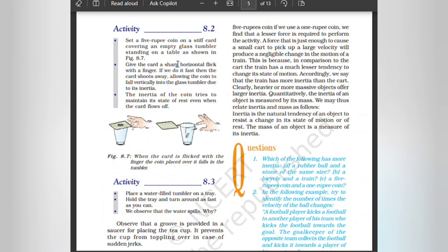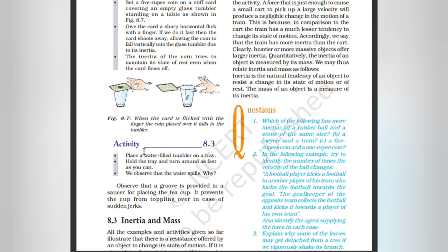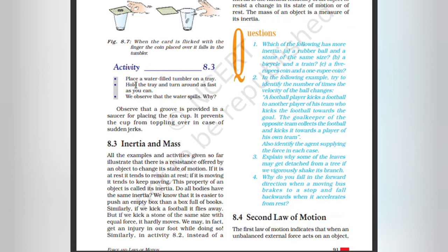Set a 5-rupee coin on a stiff card covering an empty glass tumbler standing on a table. Give the card a sharp horizontal flick with a finger. If done fast enough, the card shoots away, allowing the coin to fall vertically into the glass tumbler due to its inertia. The inertia of the coin tries to maintain its state of rest even when the card flows off. Place a water-filled tumbler on a tray, hold the tray and turn around as fast as you can — observe that the water spills. Also observe that a groove is provided in a saucer for placing the teacup to prevent the cup from toppling over in the case of sudden jerks.